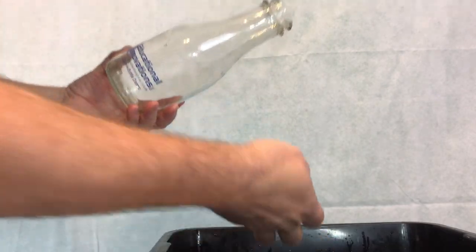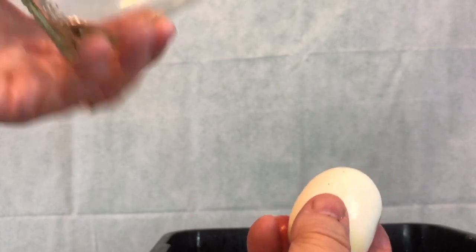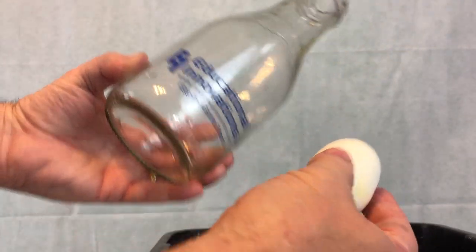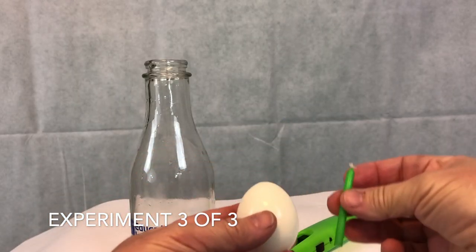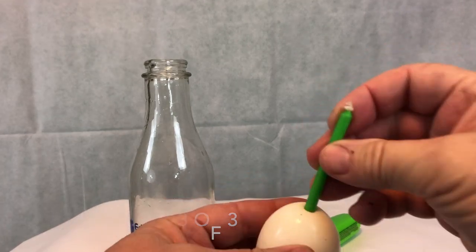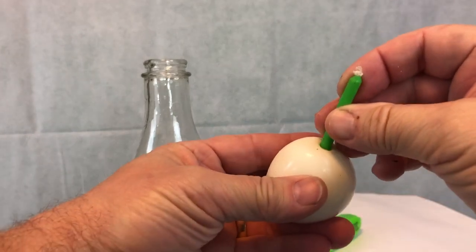So we're able to get the egg back out of the bottle, which is probably the harder experiment of both of them. And there you go. Alright, experiment three of three. This time we're going to take a birthday candle, put it inside the hard-boiled egg.